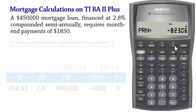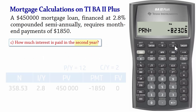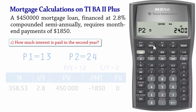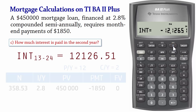Next we want to calculate the total interest paid in the second year. Since payments are made monthly, the first year comprises payments 1 to 12. The second year will comprise the next 12 payments, which will be the 13th to 24th. So we set P1 to 13, Enter, scroll down and set P2 to 24, Enter. Scroll down to interest and we have a total interest of $12,126.51 for the second year.